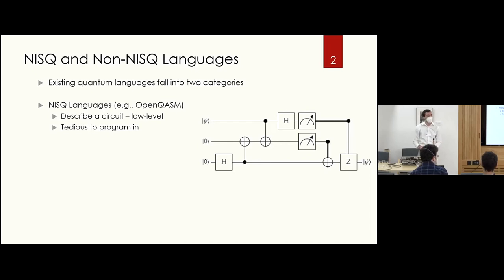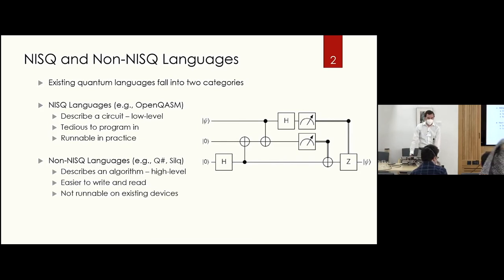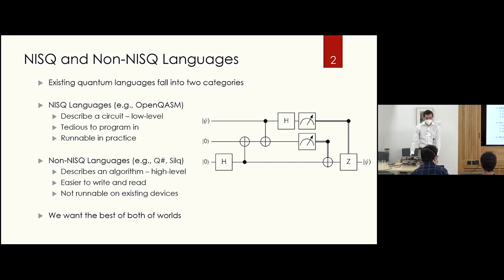A downside of NISC languages is that, while they are runnable in practice, non-NISC languages such as Q# and Silq describe algorithms at a higher level and are easier to read and write, yet the downside is that they are not runnable on existing devices. We want the best of both worlds, and that is what we aim MACBETH to be — something to bridge the gap between NISC and non-NISC languages.